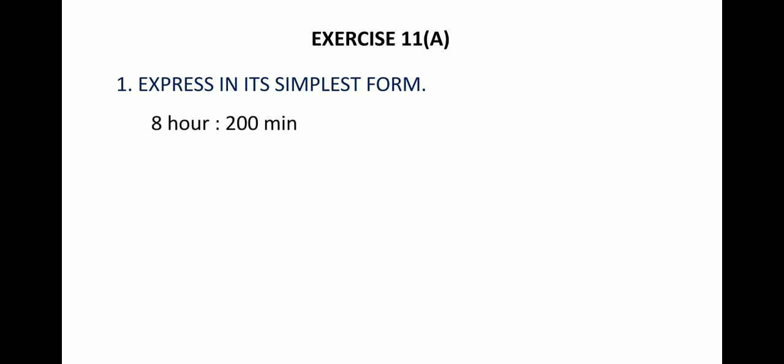Similar example: 8 hours:200 minutes. I prefer again converting hours into minutes - the bigger unit is to be converted into the smaller one. 1 hour = 60 minutes, therefore 8 hours = 8 × 60 = 480 minutes. So 8 hours can be written as 480 minutes:200 minutes.